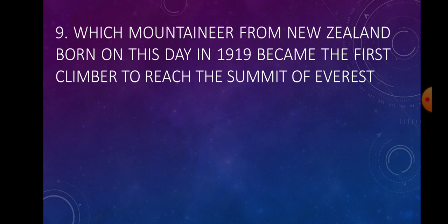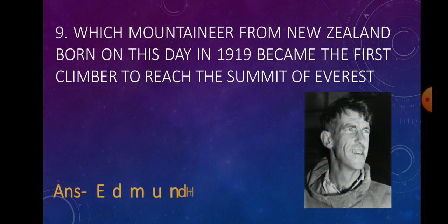Question number 9. Which mountaineer from New Zealand, born on this day in 1919, became the first climber to reach the summit of Everest? Answer: Edmund Hillary. He, along with Tenzing Norgay, first made the world record by reaching the summit of Everest.